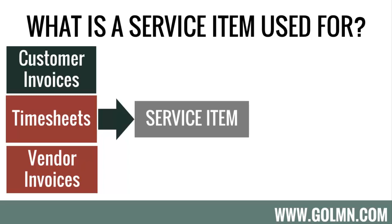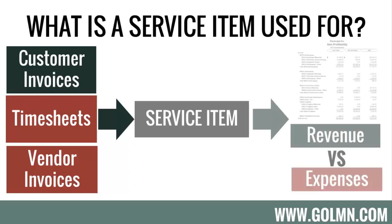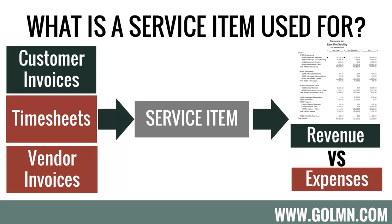For example, if I had a maintenance division I wanted to track separately on my P&L, all my customer invoices from the maintenance division could be assigned to the service item called 'grounds maintenance.' I could also assign any timesheets for the maintenance division to that same service item, and the same with vendor invoices for materials, equipment rentals, or subcontractors. If I entered all those to that maintenance service item, it will make sure everything ends up in the right cost of goods sold and revenue accounts in my P&L, and it allows me to generate a report showing revenue earned in maintenance versus what we spent on labor, materials, rentals, and subs.